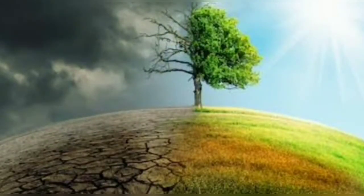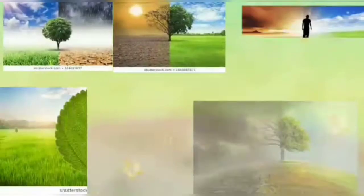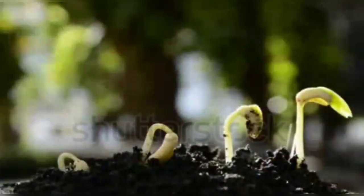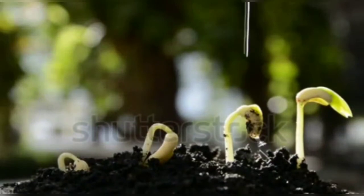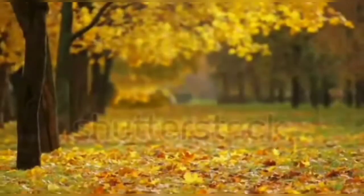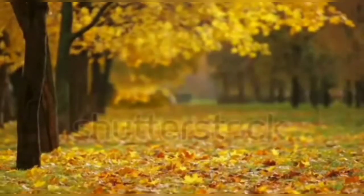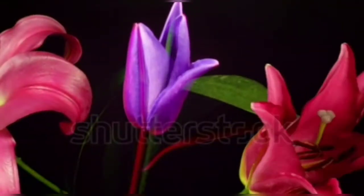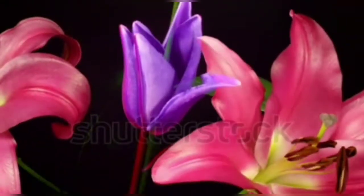Many changes are taking place around us on their own. In the fields, the crops change from time to time. Sometimes leaves fall from trees, change color and dry out. The flowers bloom and then fade away.